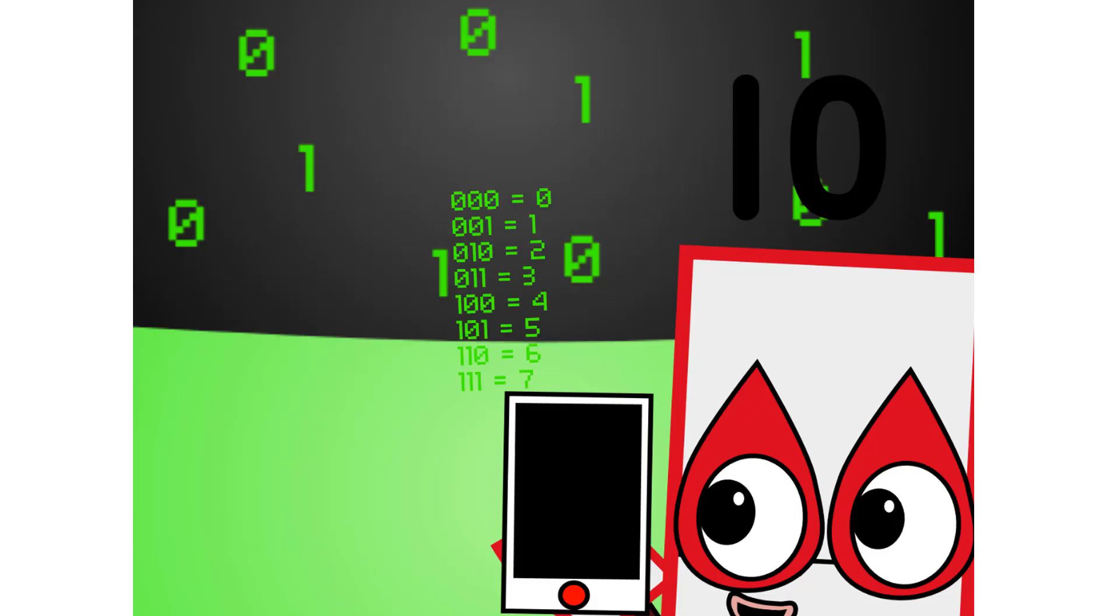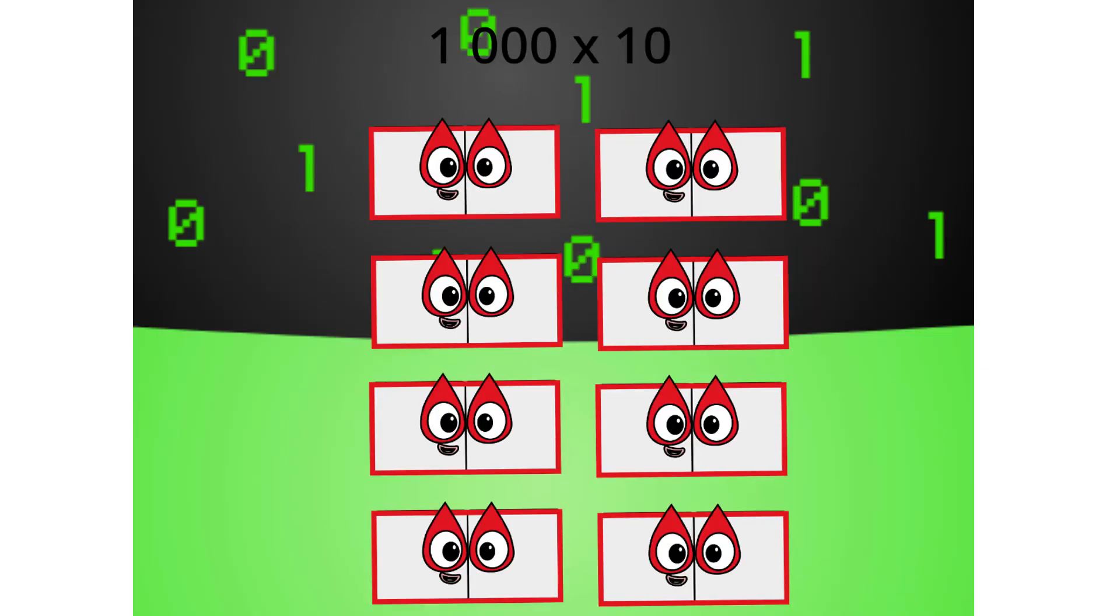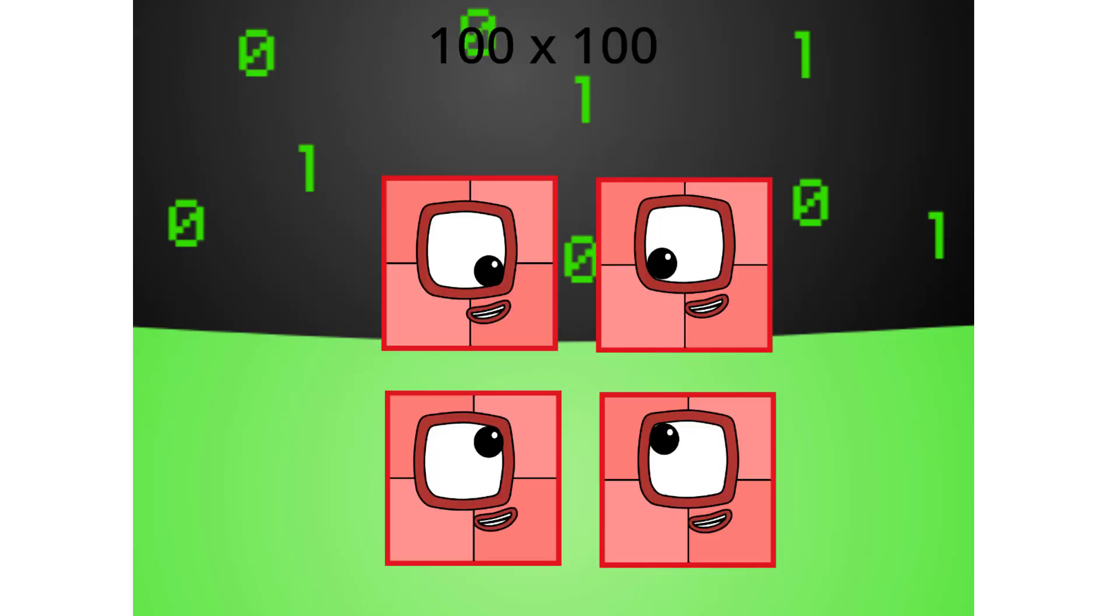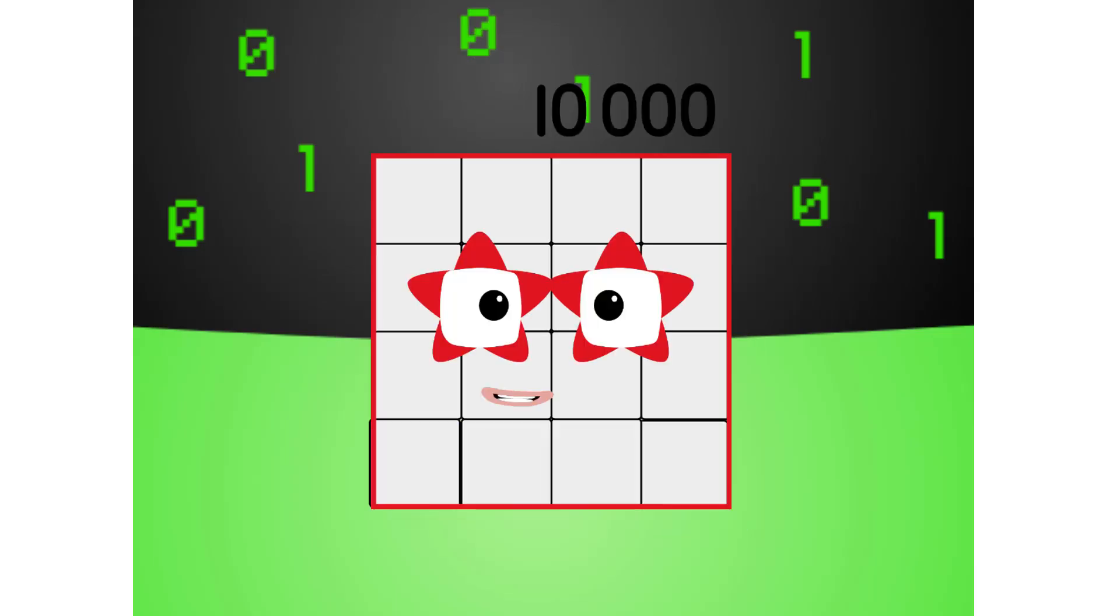There are 8 different combinations of 3-digit numbers in binary. This means that binary can easily be coded into octal. There are also 16 different combinations of 4-digit numbers in binary. This means that binary can easily be coded into hexadecimal too.